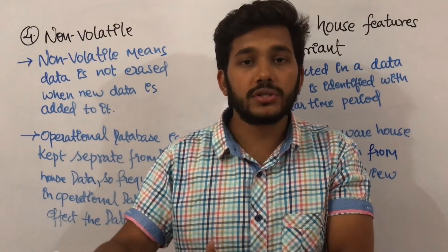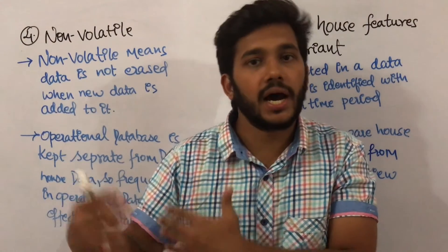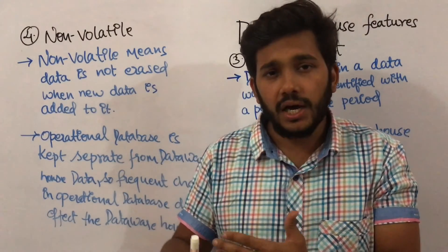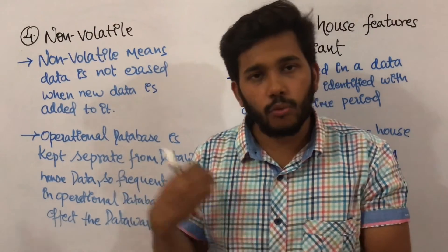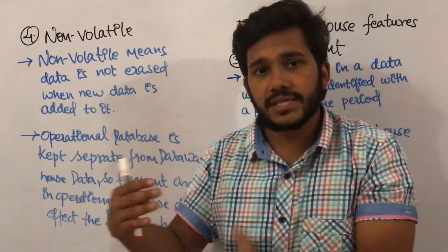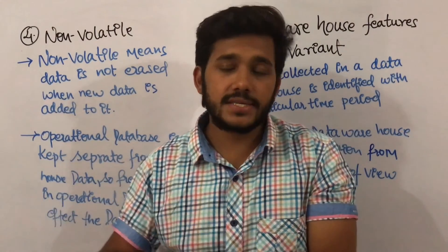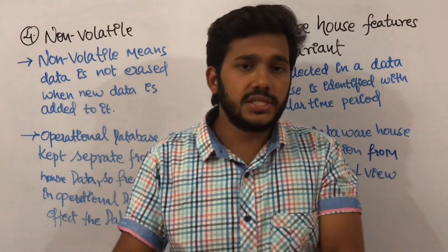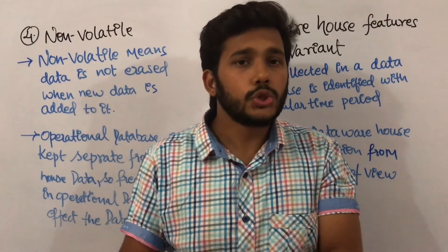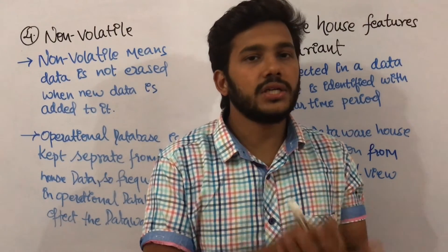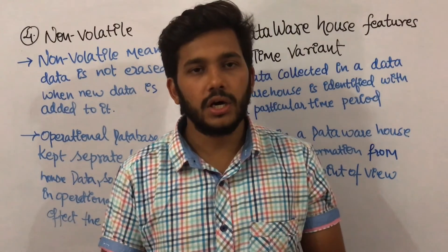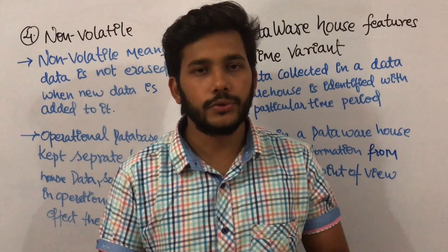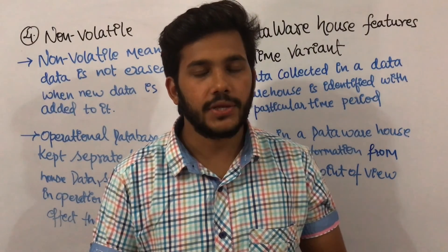For example, if I change the menu prices of my restaurant regularly, that should not affect the data warehouse, which holds the total menu and annual sales. I can analyze whether raising menu prices gave more profit or lowering them gave more profit. So the operational database can change frequently and is kept separate from the data warehouse. These were the main four features of data warehouse — please like, comment, and subscribe. Thank you.